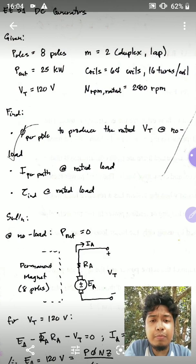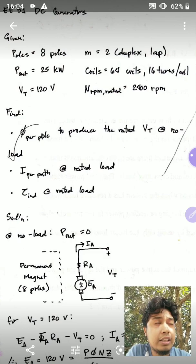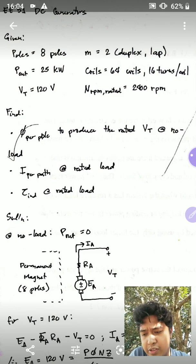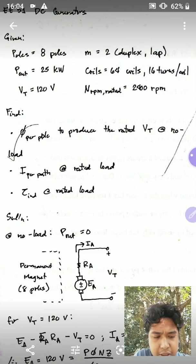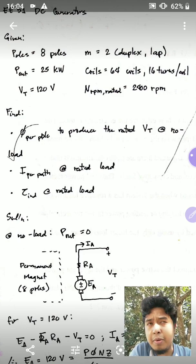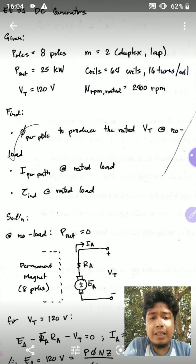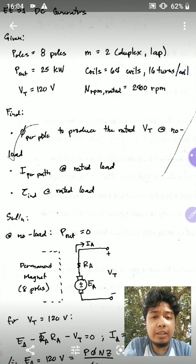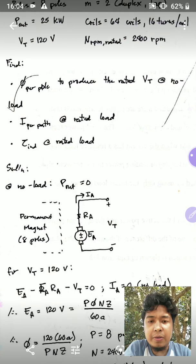We also need to find the current per path at rated load, and the torque at the rated load.